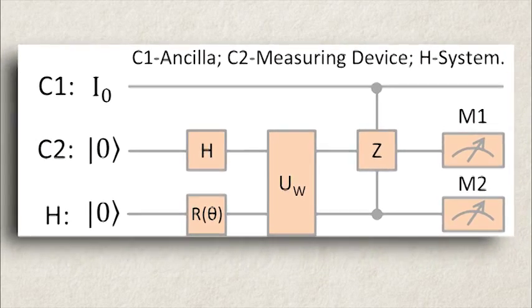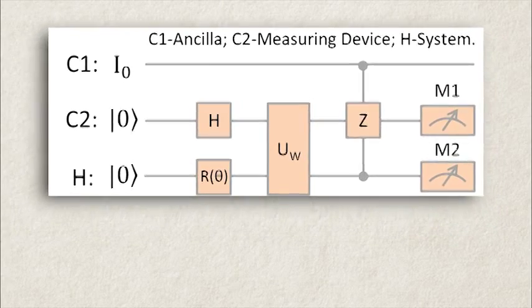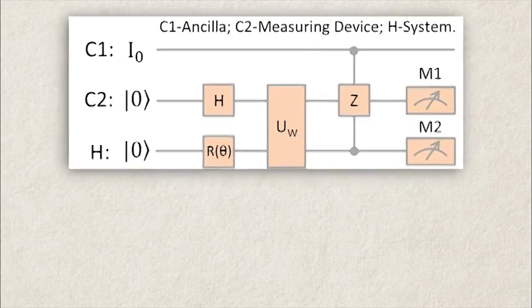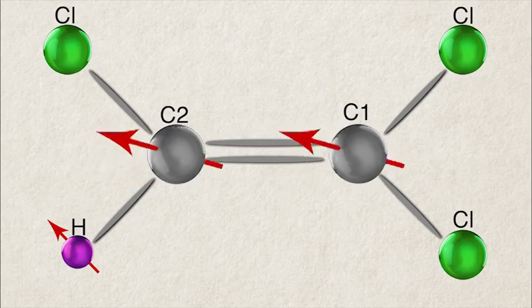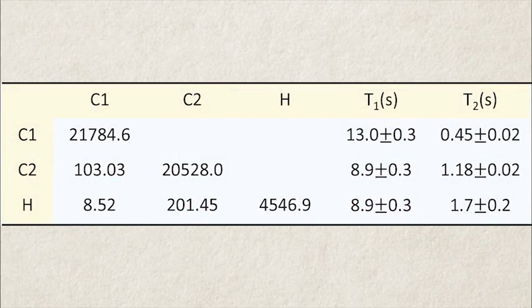In our actual implementation in liquid state NMR, we used a controlled controlled rotation instead of a swap to reduce the running time. Using a three-qubit molecule, we were able to get a number of interesting weak values.